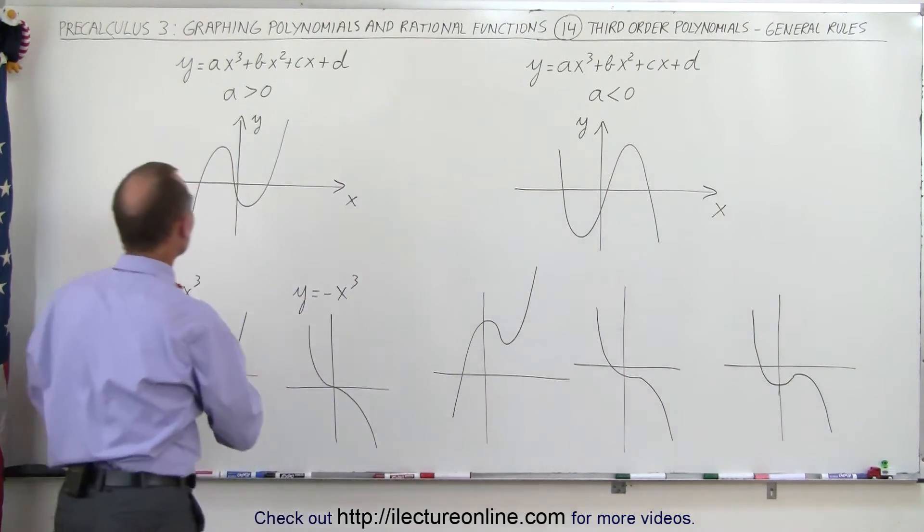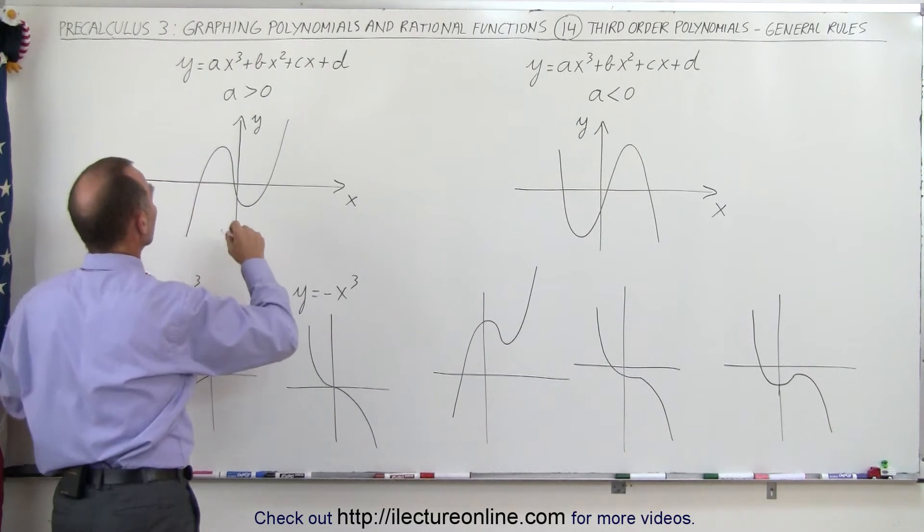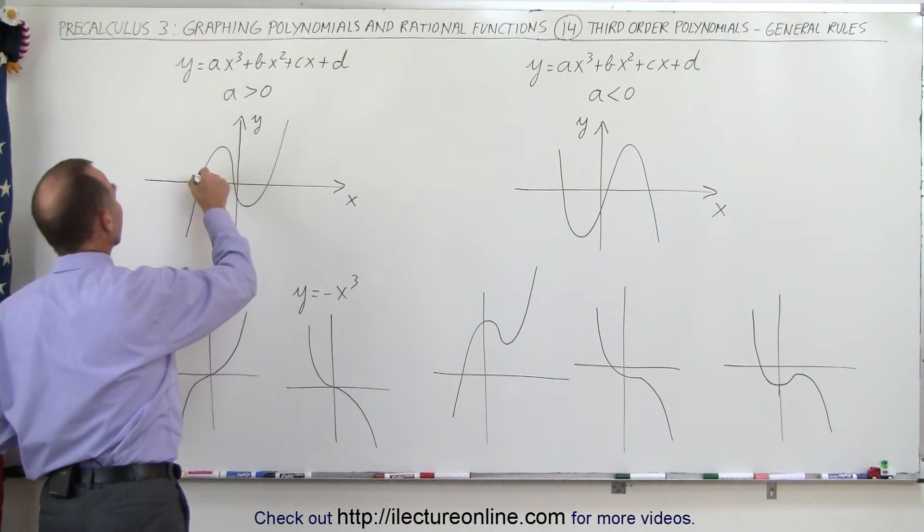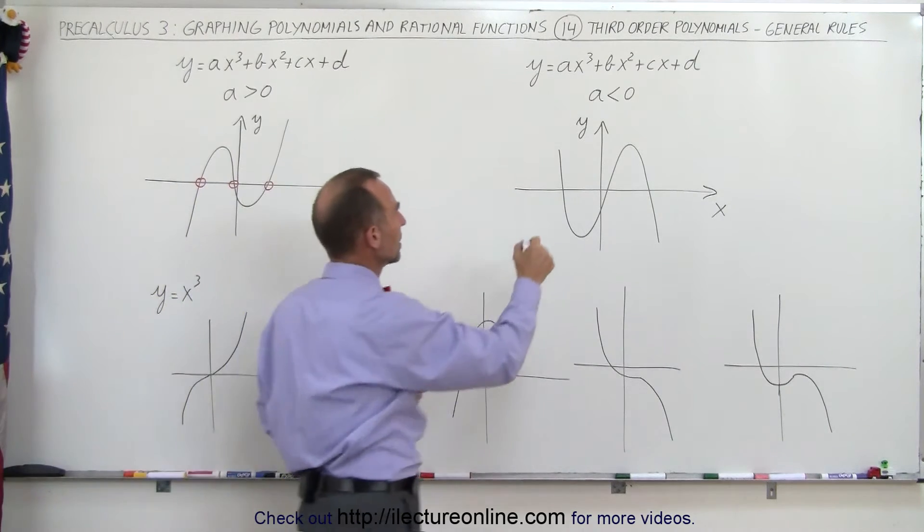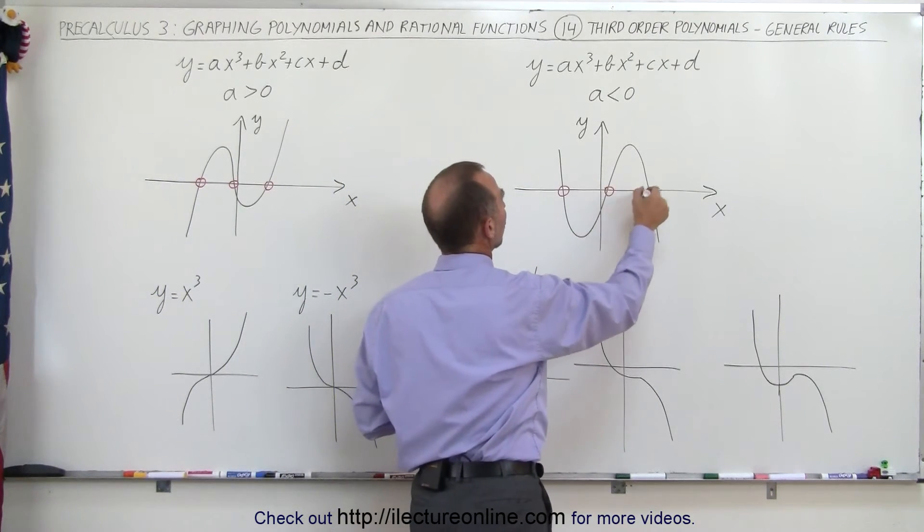Now notice in each case, each of these has three roots. So a polynomial of third order can have as many as three roots: one, two, three, one, two, three.